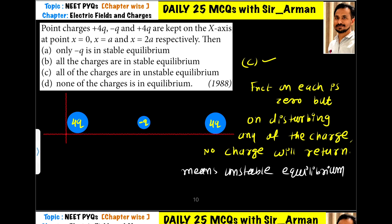In the first option, it is given that only -q is in stable equilibrium. See here, these charges, both 4q charges, are at equal distance, right? They exert equal force. As this is negative, this will pull towards left and this will pull towards right, and both forces are equal. So this charge is in equilibrium.